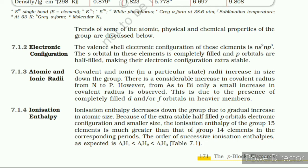7.1.4 Ionization Enthalpy. Ionization enthalpy decreases down the group due to gradual increase in atomic size. 7.1.5 Electronegativity. The electronegativity value in general decreases down the group with increasing atomic size; however, amongst the heavier elements the difference is not as much pronounced.